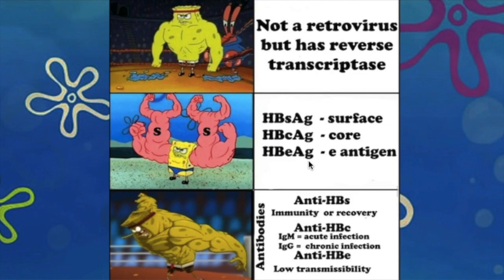HBeAg is not part of the mature HBV virion. The important antibodies include: Anti-HBs antibody, which indicates immunity or recovery from infection; and Anti-HBc antibody — IgM indicates acute recent infection and IgG indicates prior exposure or chronic infection.